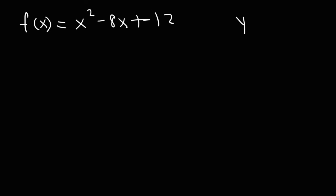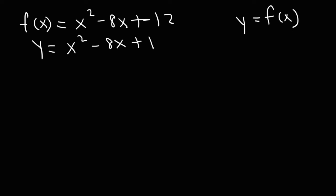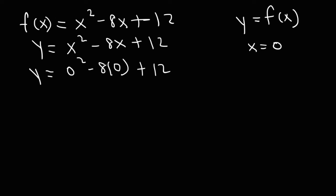You need to know that y is equal to f(x), so you could replace f(x) with y. To find the y-intercept, plug 0 in for x. So this is going to be y equals 0 squared minus 8 times 0 plus 12, which gives us y equals 12. We can write this as the ordered pair (0, 12).